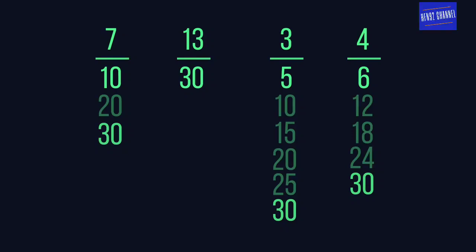The lowest common multiple of our numbers is 30. So we will look to find equivalent fractions with a denominator of 30. As 13 over 30 already has a denominator of 30, we do not need to change it.